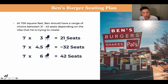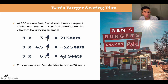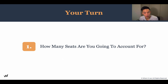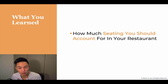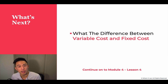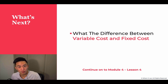For our example at 700 square feet, that gives a range of 21 seats to 42 seats, calculated by dividing 700 by 100 and multiplying by three or six. Ben decides to go with 30 seats — not too spacious, but with a little room to breathe. Now it's your turn to figure out how many seats you should account for. Next up, we'll be talking about the difference between variable costs and fixed costs. See you in the next video.